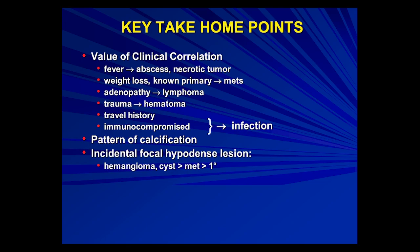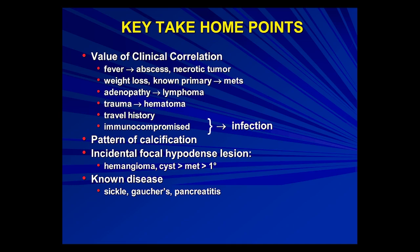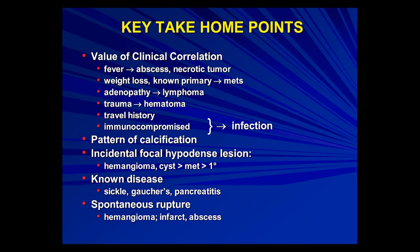An incidental focal hypodense lesion on CT is probably the most common everyday scenario. Think hemangioma, cyst, maybe an infarct, much less commonly a met or a primary — with mets, you'll have a known primary most of the time. Known diseases to remember: chronic pancreatitis, Gaucher's disease — usually children with massive splenomegaly — can also have small hypodensities resembling micro-abscesses within the enlarged spleen. Spontaneous non-traumatic rupture is very rare, but hemangioma, infarct, and abscess can do it — follow patients with acute left upper quadrant pain to watch for subcapsular fluid or vascular flow phenomena indicating acute infarct.